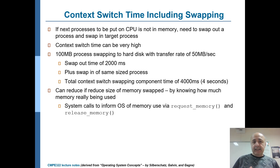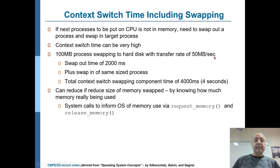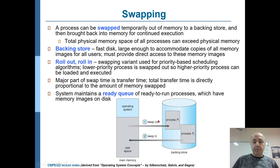Swapping itself takes some time, so you should look at the context switch time — the cost of doing a context switch — and decide accordingly. For example, if you have a process of 100 megabytes being swapped out to swap storage, with a hard disk transfer rate of 50 megabytes per second, it will take two seconds to swap out this process.